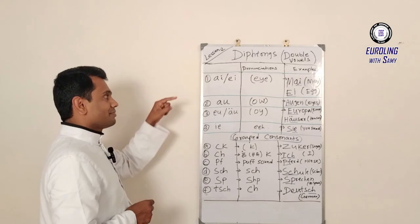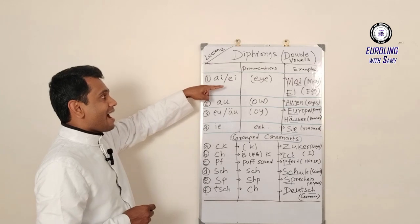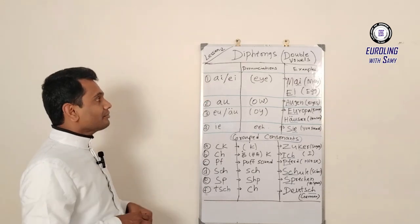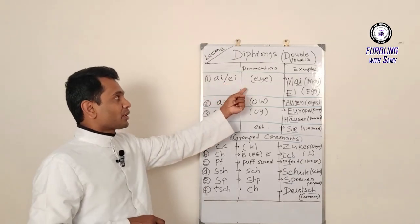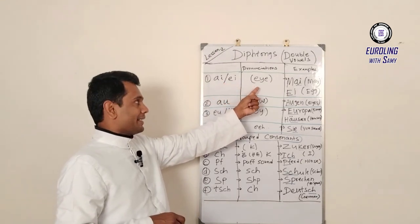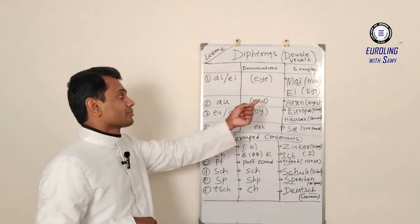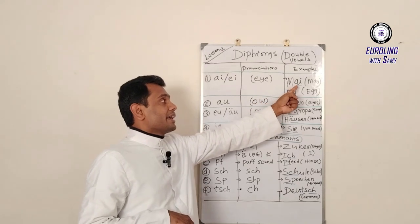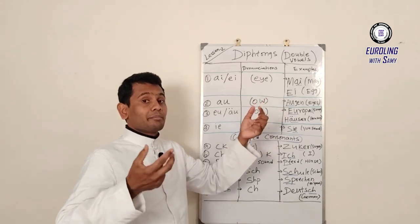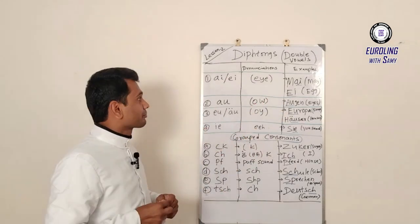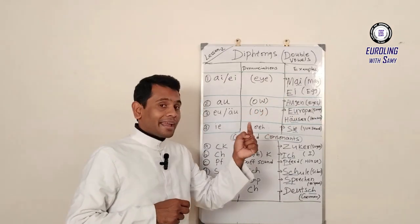The first type is AI. That is AI or EI. It is pronounced as AI. For example, M-A-I, Mai, that means May. Let's give another example. AI, that is AI, I, that is a letter I.